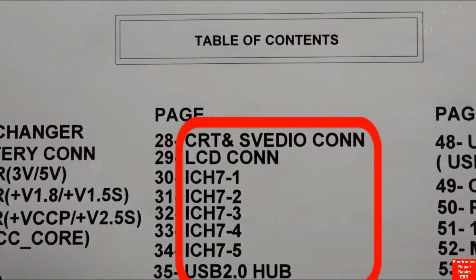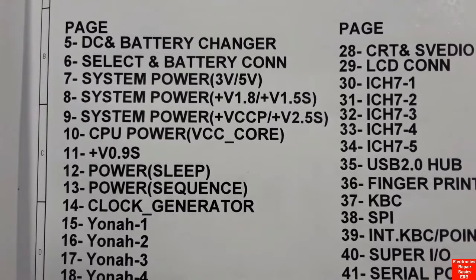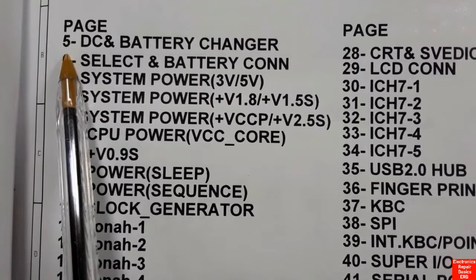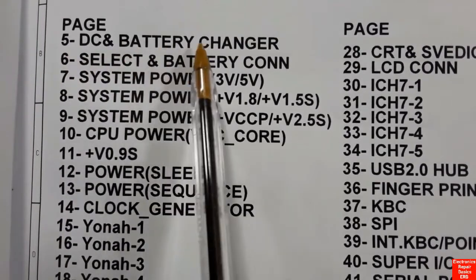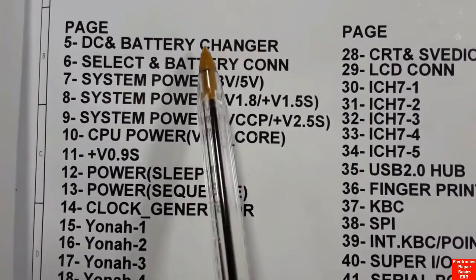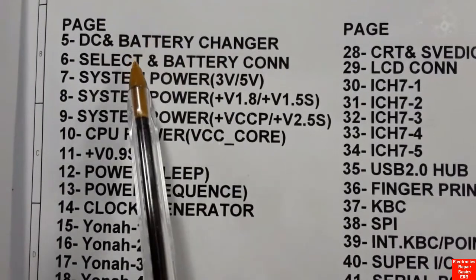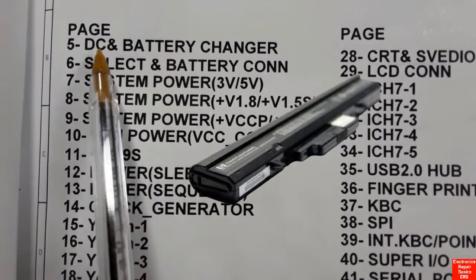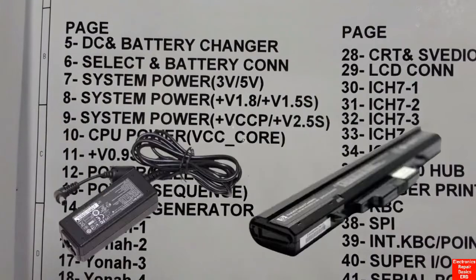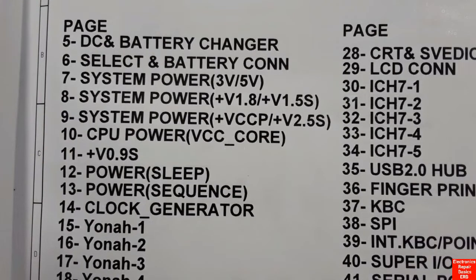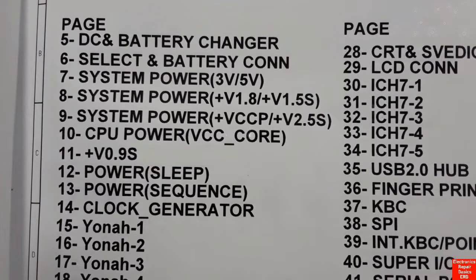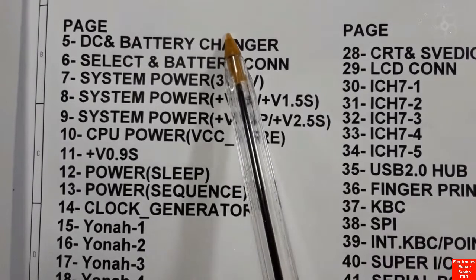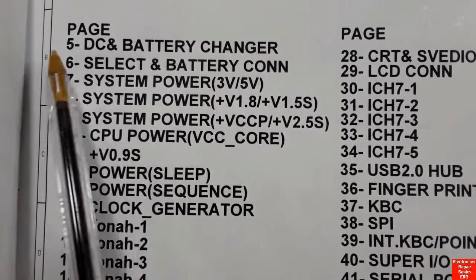Here on the left we have pages and on the right this is the discrepancy. In page number five we have the DC and battery charger. Basically the circuit switches between the DC adapter and the battery — when the adapter is connected, the battery will stop powering the motherboard.